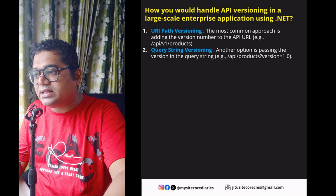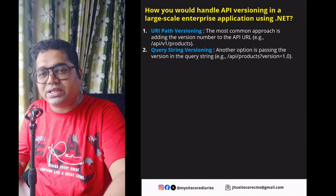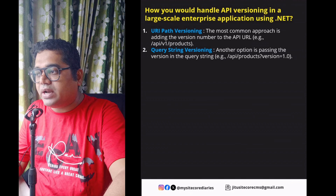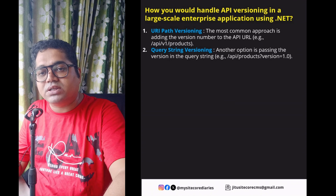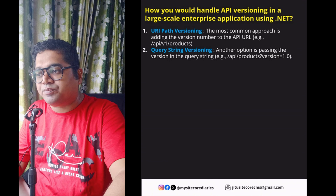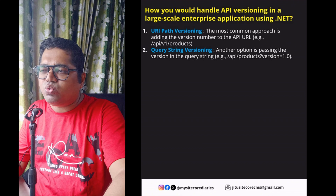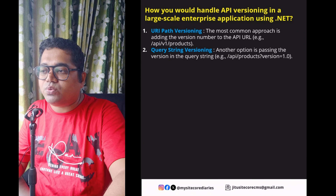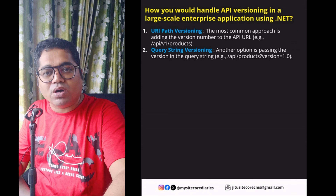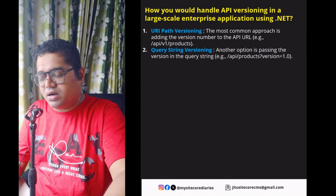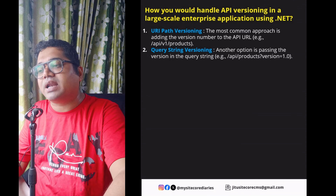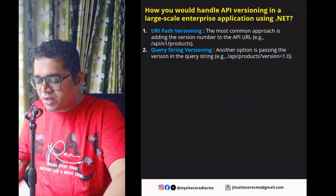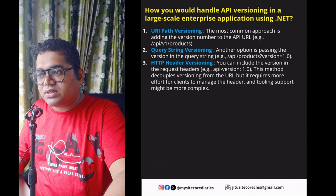With query string versioning, you add the API version in the query string itself. These first two approaches — URL path versioning and query string versioning — are the cleaner approaches, requiring minimal work on both the API side and the client side.